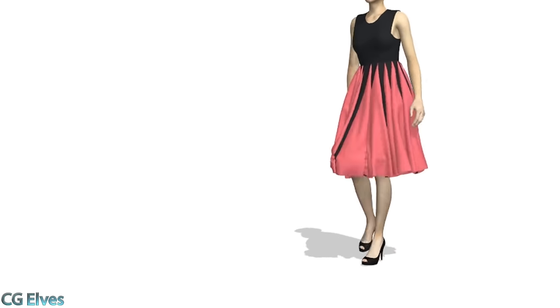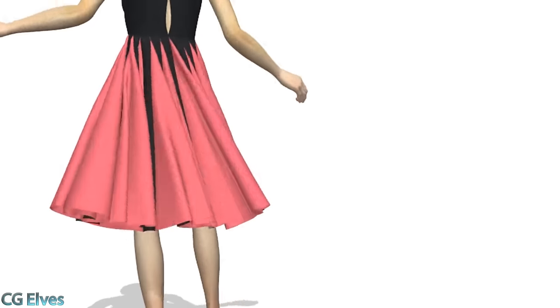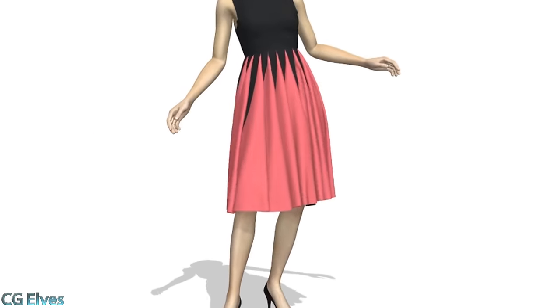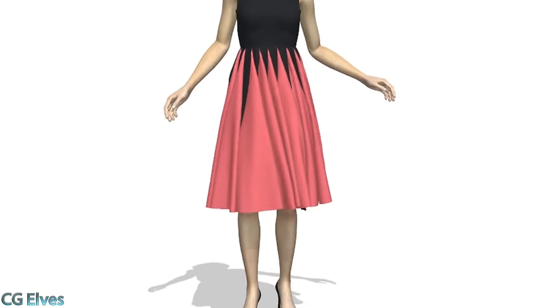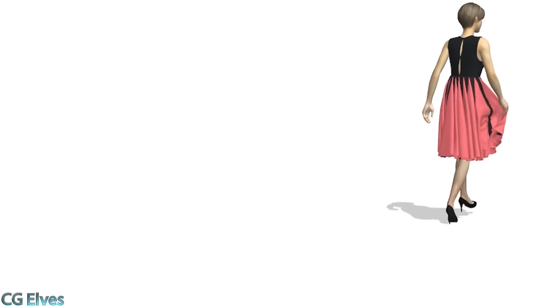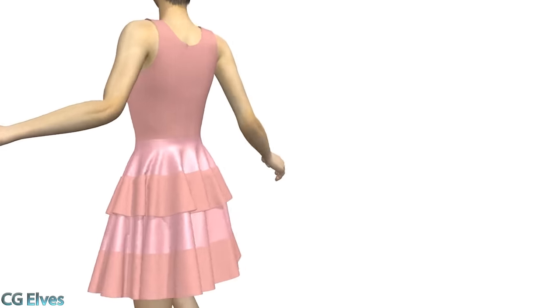In case you don't know what MD is, in short, it's a program to quickly create dynamic 3D clothes without needing to sculpt wrinkles for hours in a program like ZBrush. You can also animate the clothes — simply bring in your animated model, press the record button and the program will animate the clothes for you.